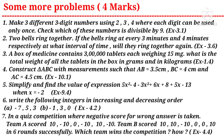Question seven: in a quiz competition where a negative score is given for wrong answers, Team A scored 10, −10, 0, −10, 10, −10 and Team B scored 10, 10, −10, 0, 0, 10 in six rounds respectively. Which team wins the competition and by how much? — a question from the fourth chapter.